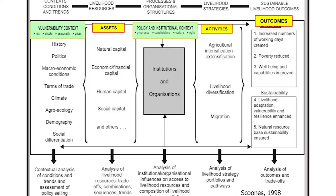Depending on the assets people have and the context in which they are, mediated by institutions, they can engage in a range of activities — what Scoones calls livelihood strategies. He classifies these into three parts: one is within agriculture itself, where you either intensify agriculture — using the same plot of land for multiple crops, increasing crop diversity, growing different crops seasonally — or you extensify, cultivating more and more land.